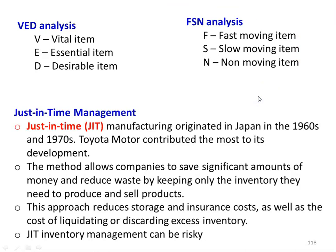Just in Time (JIT) manufacturing originated in Japan in the 1960s and 70s. Toyota Motor contributed most to its development. The method allows companies to save significant amounts of money and reduce waste by keeping only the inventory needed to produce and sell the product. This approach reduces storage and insurance costs, as well as the cost of liquidating or discarding excess inventory. Orders are placed as and when required, though JIT inventory management also carries risk.